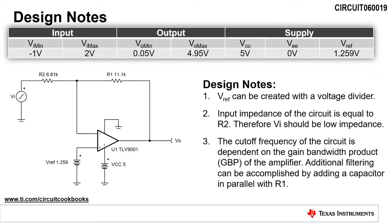Finally, the cutoff frequency of the circuit is dependent on the gain bandwidth product of the amplifier. Additional filtering can be accomplished by adding a capacitor in parallel with R1.